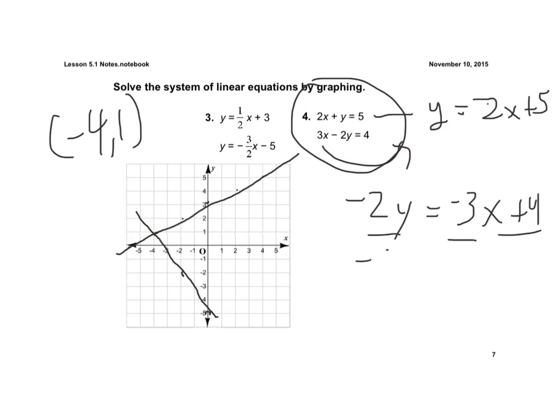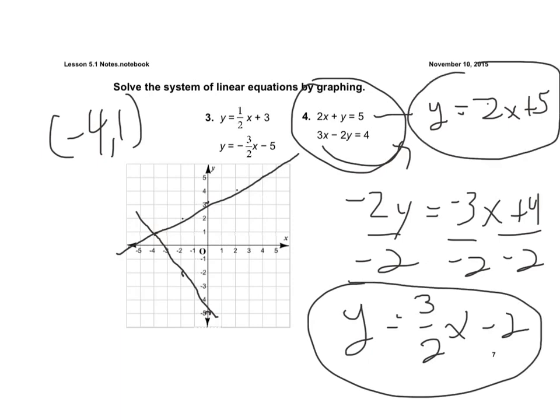Then divide every term by negative 2, and we get y equals positive 3 halves x minus 2. Then we'd have these two equations to graph, and where they intersect would be our solution.